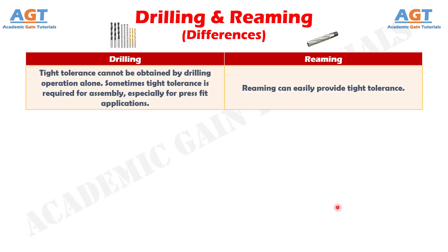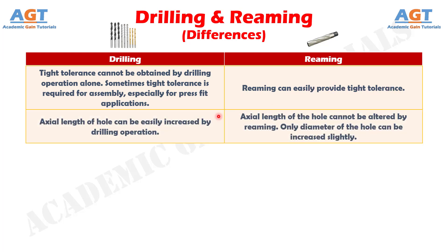Number six: tight tolerance cannot be obtained by drilling operation alone. Sometimes tight tolerance is required for assembly, especially for press fit applications, whereas reaming can easily provide tight tolerance. Number seven: the axial length of a hole can be easily increased by drilling operation, whereas the axial length of a hole cannot be altered by reaming.